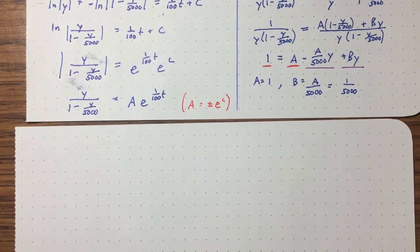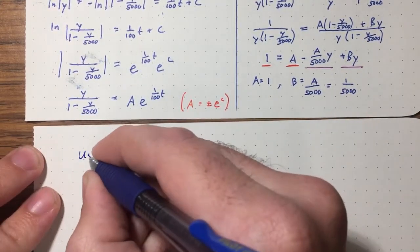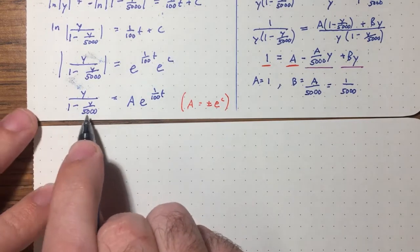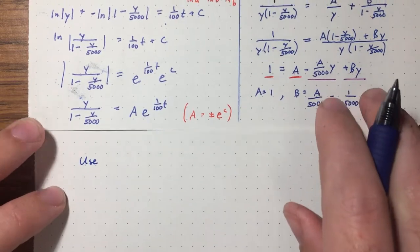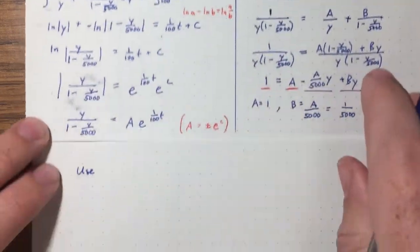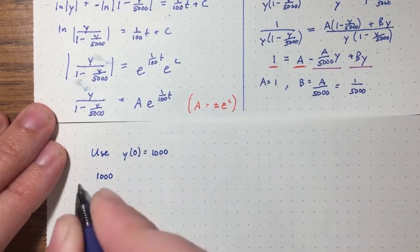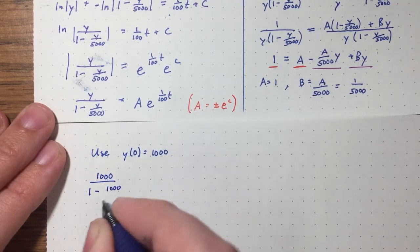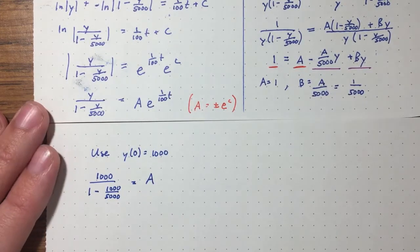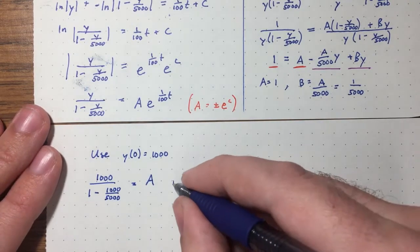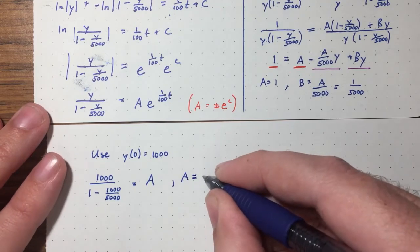There are a couple more tricky parts. I'd advise applying the initial condition now, before things get more complicated when we distribute. Using y(0) = 1000: 1000/(1 − 1000/5000) = a. Since 1000/5000 = 1/5, the denominator is 4/5, so a = 1000 · (5/4) = 1250.